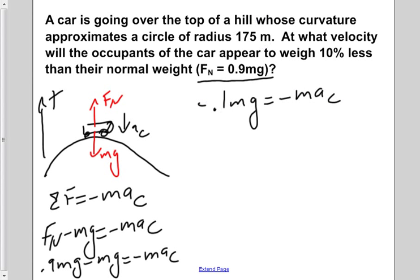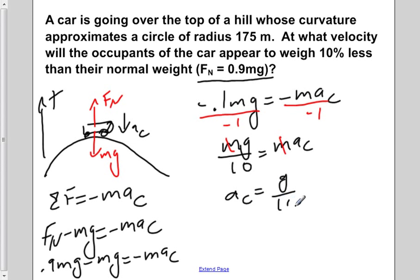Now we can divide both sides by negative 1, giving us mg. We can now rewrite 0.1 as 1 over 10, giving us mg over 10 is equal to ma centripetal. We can now divide both sides by m, canceling them out, and then we would find that a centripetal is equal to g over 10.